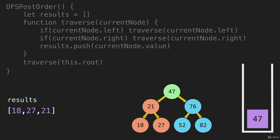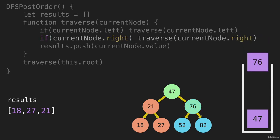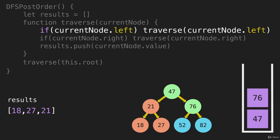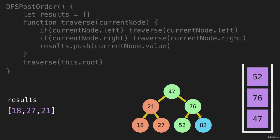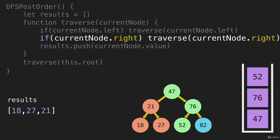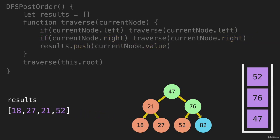Now 47 is the top of the call stack. It's gone left — now it needs to go right, and that's going to be the 76 node. We'll put that on the call stack. The 76 is going to look left, and there is an item on the left — that's the 52 — which gets pushed onto the call stack. The 52 is going to look left and right. There are no items there, and it's going to push its value into the results array. Now we can pop the 52 from the call stack.